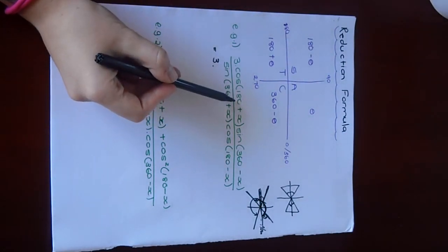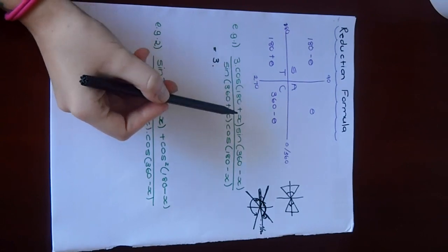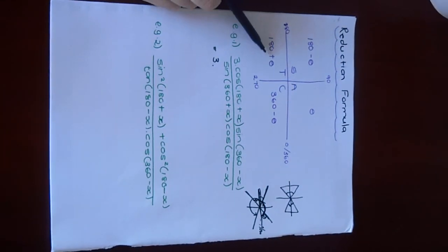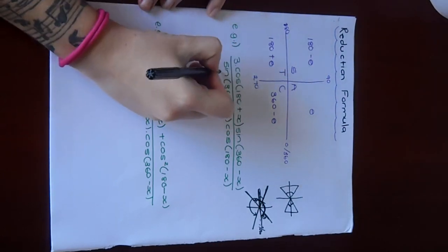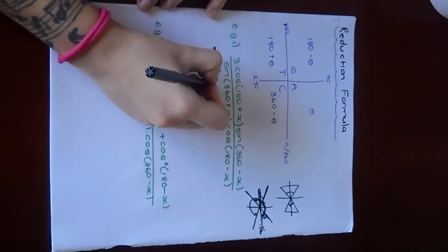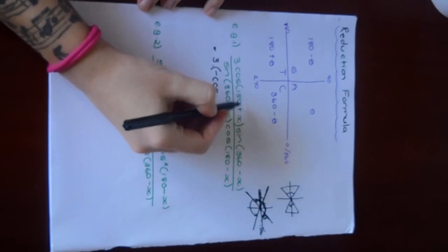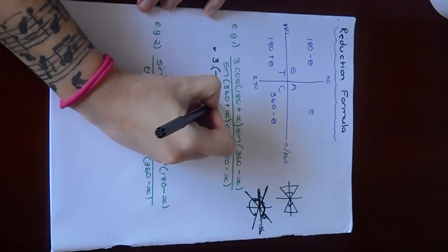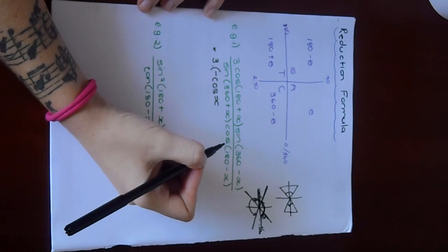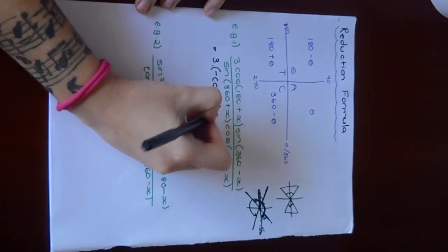180 plus theta is in which quadrant? Clearly, it is in the third quadrant. So you're going to ask yourself, what is cos in the third quadrant? It is negative. I'm just going to make a bracket, so we don't get confused. That's negative cos. And now you're going to remove the 180, so you'll just have an X. So that one's done.